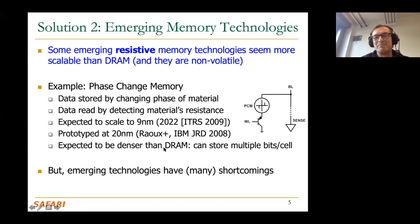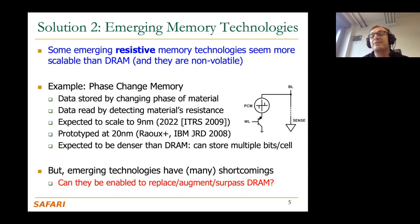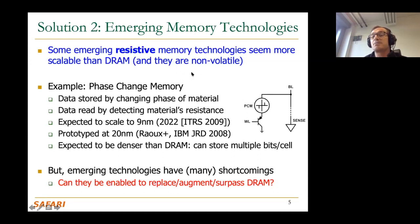The grass is not always greener on the other side — these emerging memory technologies have shortcomings as well. They present a trade-off. The key question is: can we architect them to replace DRAM, or can they augment DRAM? We could reduce some DRAM and add a lot of phase change memory — which, being more scalable, will be less costly over time. They might even surpass DRAM in capacity and persistence, and many have strong analog computation capabilities.